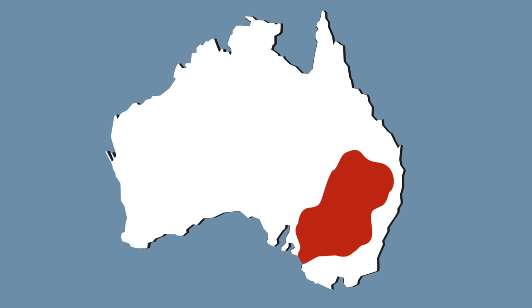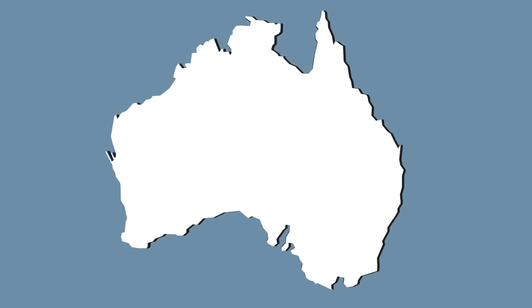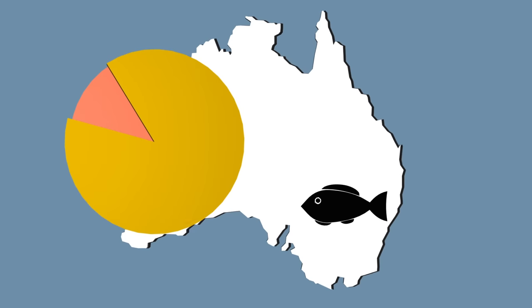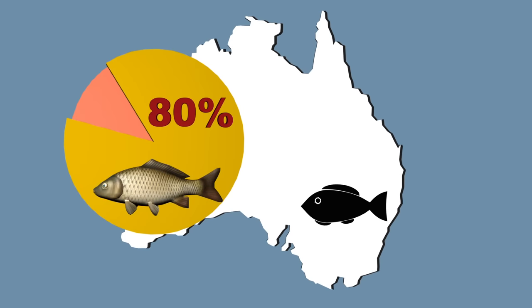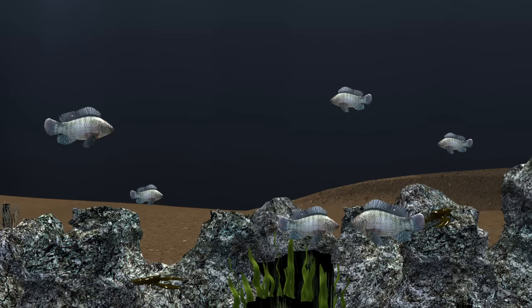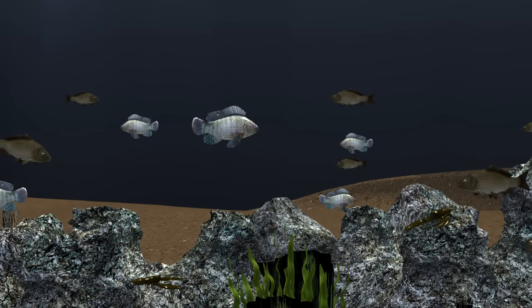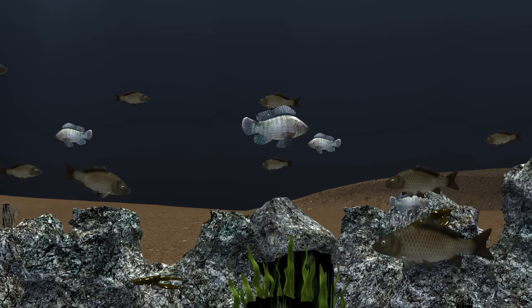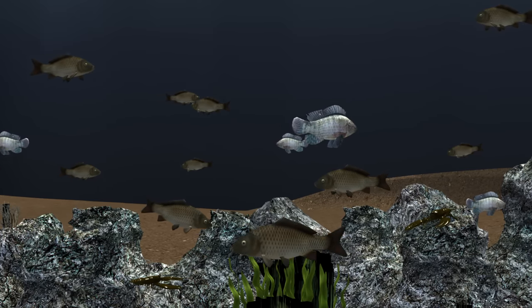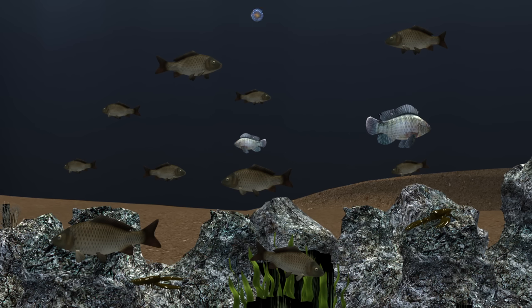Australia's carp population has gotten so out of control that the invasive species makes up 80% of the fish biomass in Australia's Murray-Darling Basin. Adult carp, as they have no natural predators in Australia and can adapt to different environments, easily out-compete native fish species for food and resources.